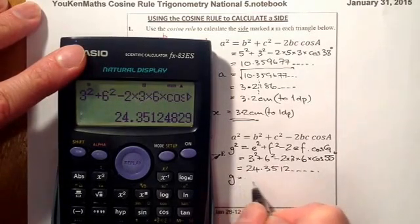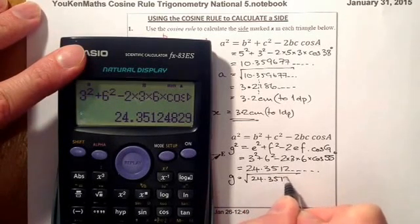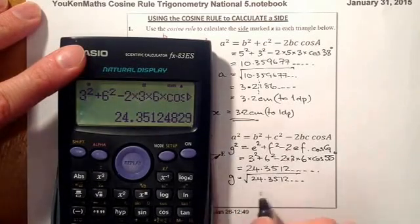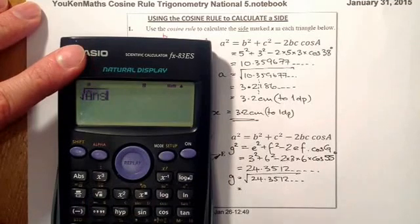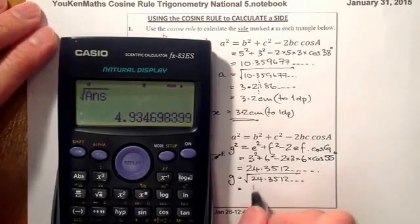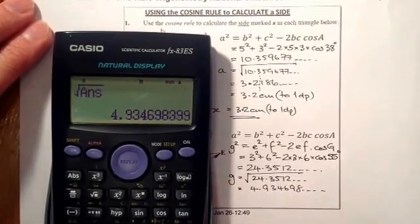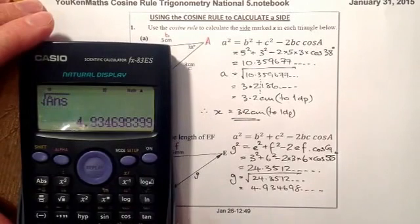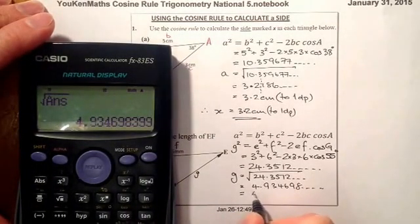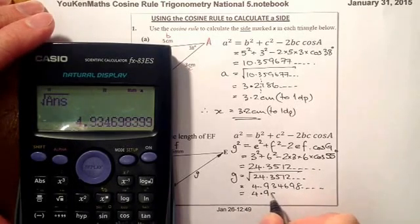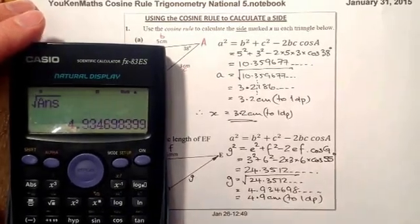So if I'm working out G, I'm going to take the square root of 24.3512, and the further characters, just leaving that in the calculator, and what that will do is, going for the square root, pulling in the previous answer, and that should equal 4.934698, and let's just round that to one decimal place. So that's going to be equal to 4.9 centimetres to one decimal place.